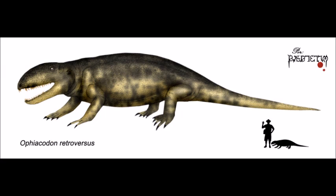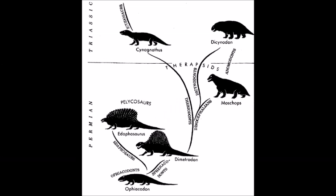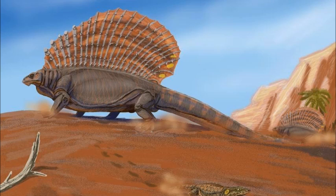Next is Ophiacodontidae, comprised of Varanid-like reptiles that may or may not have been semi-aquatic. More fossil evidence is needed to solve this question. From this point on, pelycosaurs show signs of achieving endothermy, or warm-bloodedness, by way of the massive sail on the backs of some. The first to try this were the herbivores Edaphosaurus, who lived from the Late Carboniferous to the Early Permian and were native to Europe and North America. Remember, at this time, Pangea was forming.